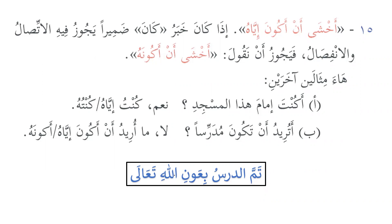Question 15: 'I'm afraid I am that student.' If the khabar of kana is a pronoun (damir), then there are two possibilities: we can connect it — attached pronoun — or disconnect it — detached pronoun. We can say one form or the other. When khabar kana is a pronoun, there is only one specific structure available; no other possibility applies when it is a damir.